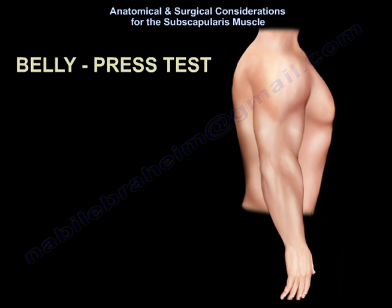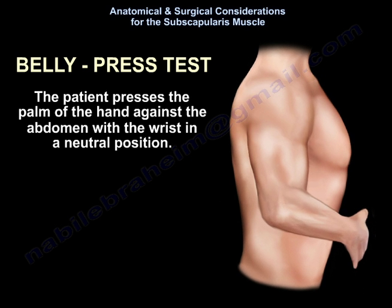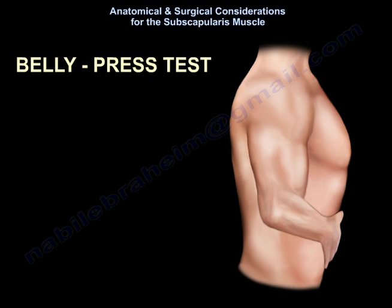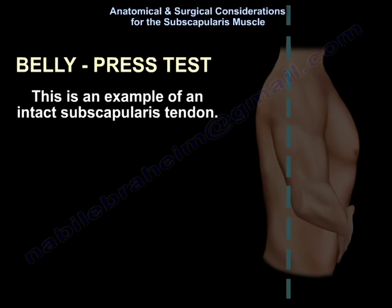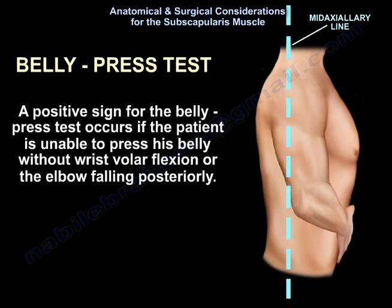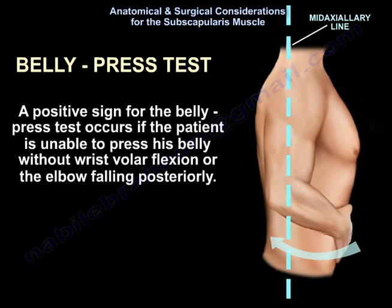The belly press test: the patient presses the palm of the hand against the abdomen with the wrist in a neutral position — this demonstrates an intact subscapularis tendon. A positive sign occurs if the patient is unable to press the belly without wrist volar flexion or the elbow falling posteriorly.